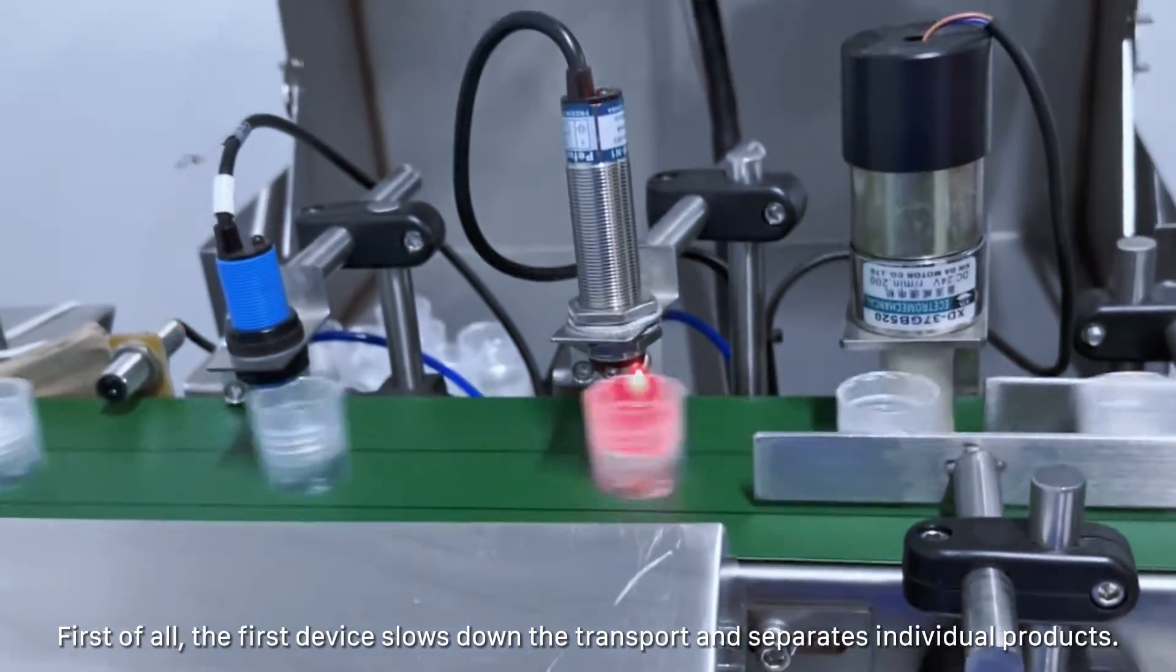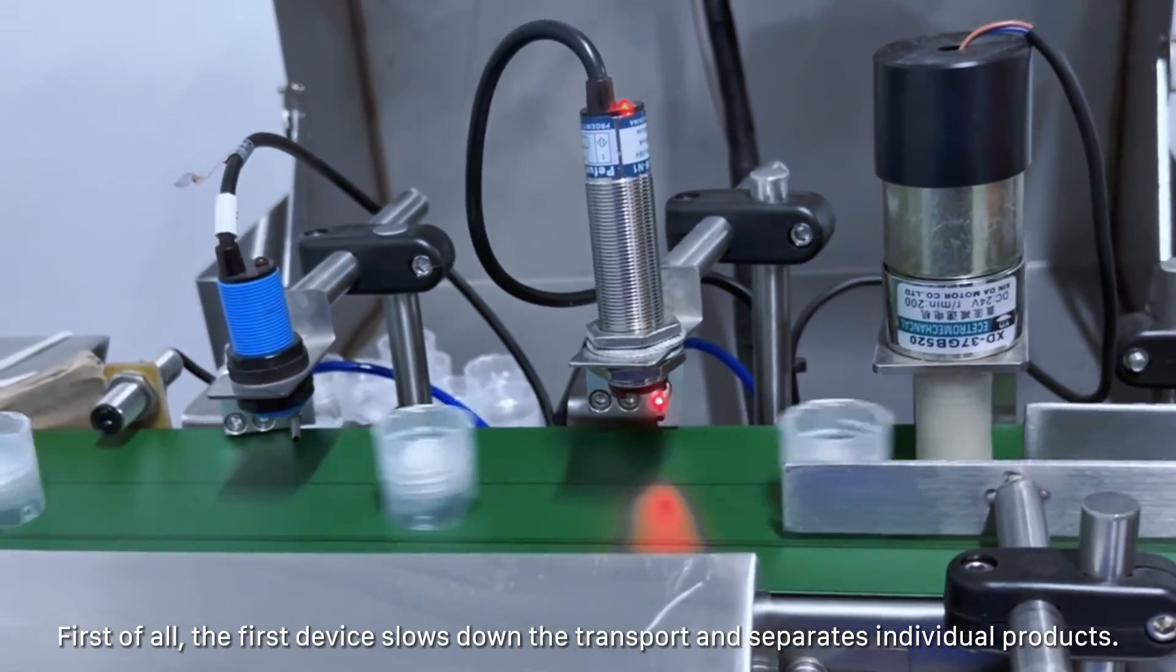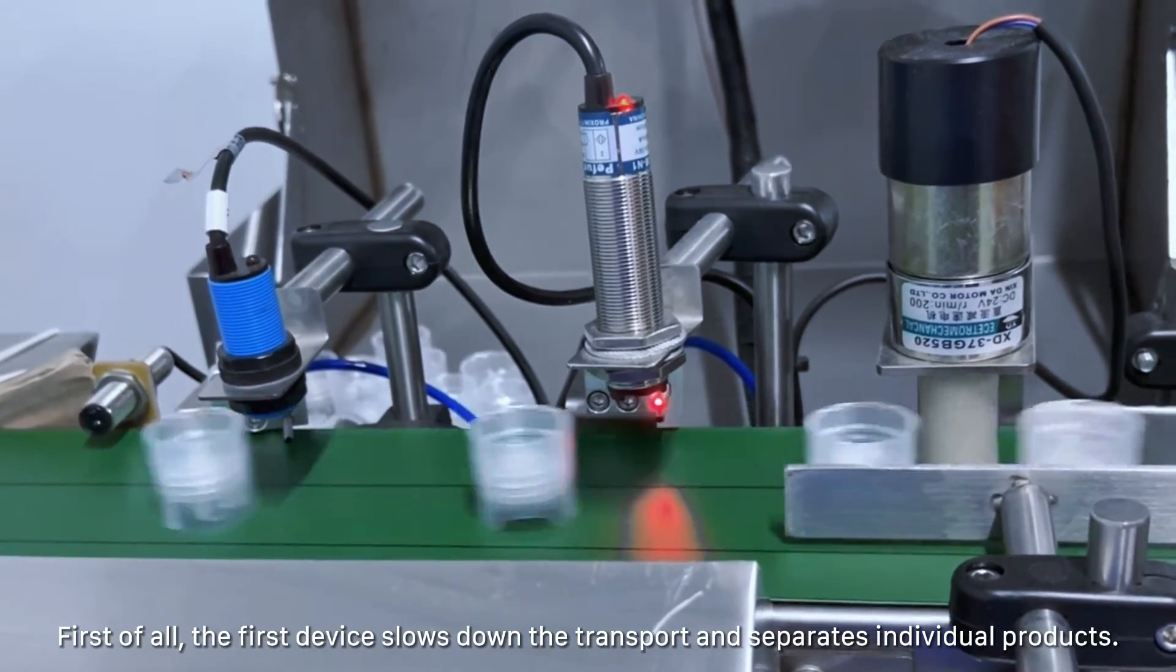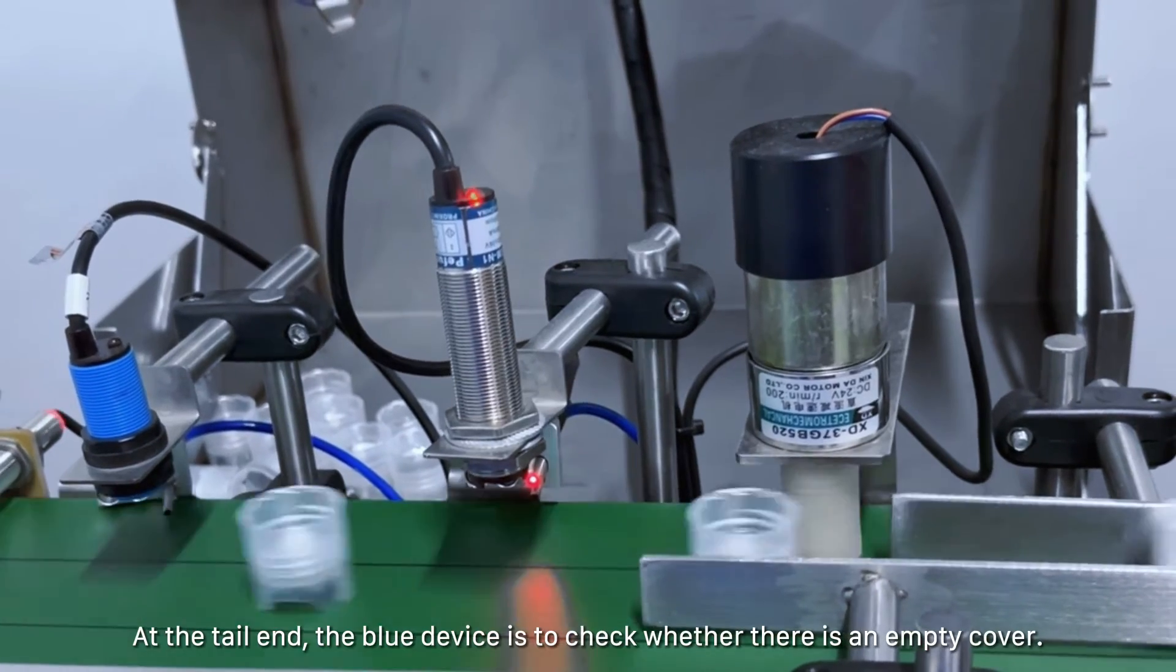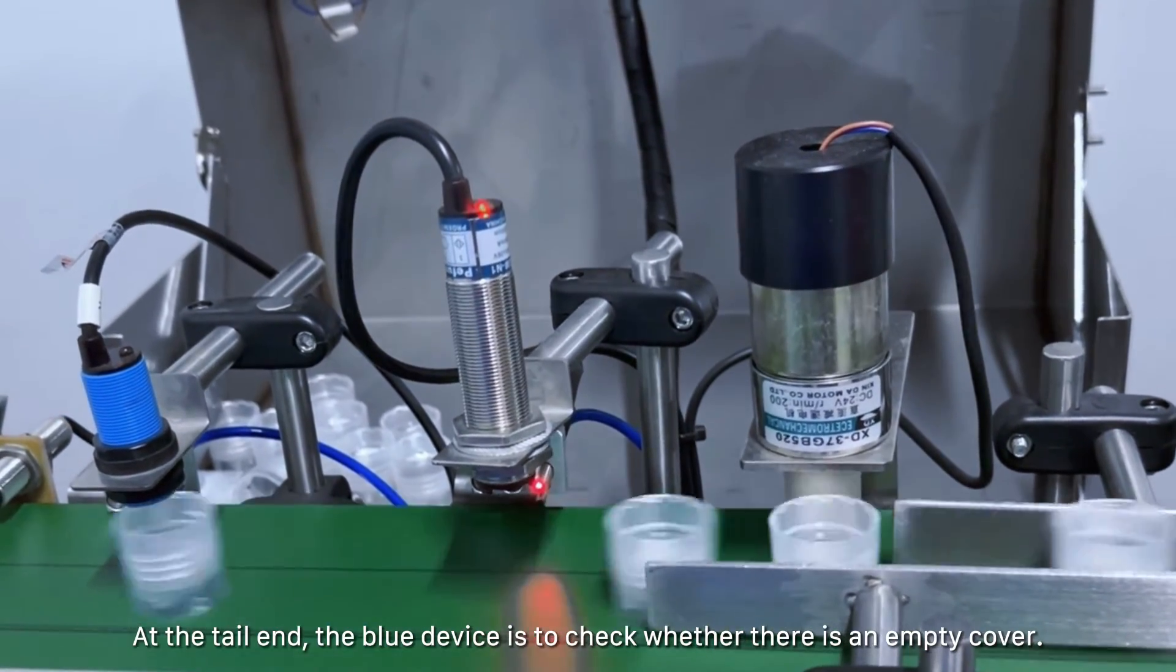First of all, the first device slows down the transport and separates individual products. At the tail end, the blue device checks whether there is an empty cover.